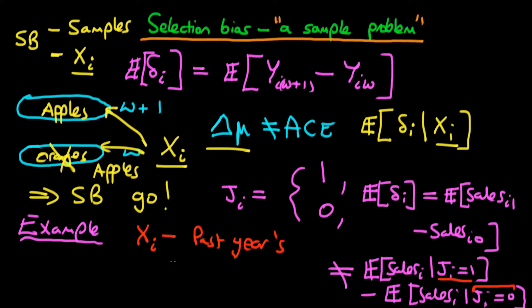An important covariate Xi might be an indicator of past level of sales for that individual — perhaps the past year's level of sales. We might think Xi is a relatively good indicator of innate motivation and how good a salesman is. So if we were able to make the two groups — those that did undertake on-the-job training and those that didn't — similar in terms of past year's level of sales, then we might be able to understand the difference in means between these two groups as representing some sort of causal effect.